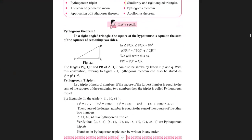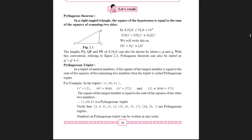Let's recall what Pythagoras theorem is. In a right angle triangle, the square of the hypotenuse is equal to the sum of the squares of the remaining two sides. So if we have a right angle triangle PQR where angle PQR is 90 degrees, then PR square is equal to PQ square plus QR square.